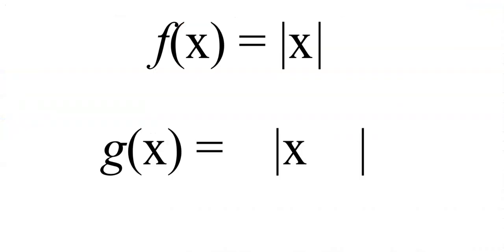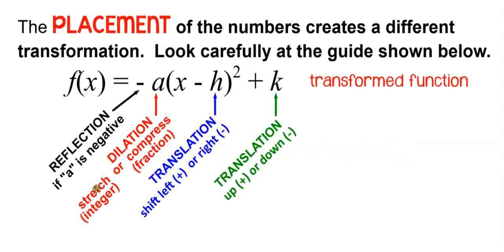Now you can have all 4 transformations at once. A reflection, a dilation, a shift 7 units left, and a shift 8 units down. Don't forget to review the placement of the numbers, and what they perform.